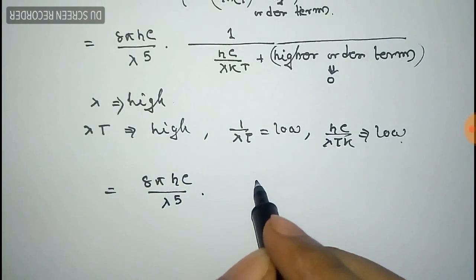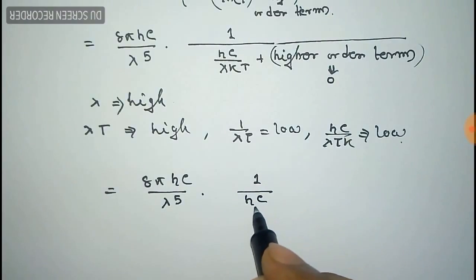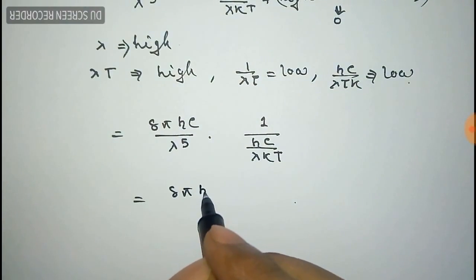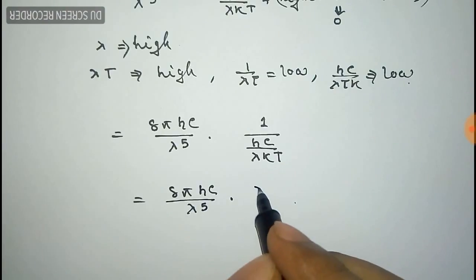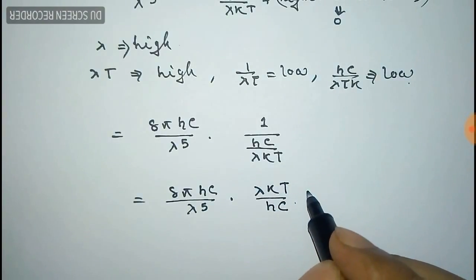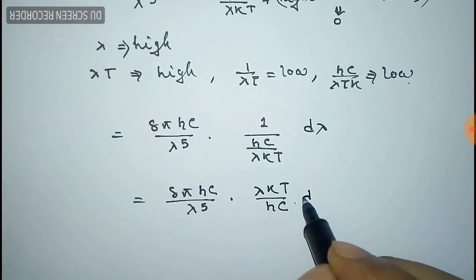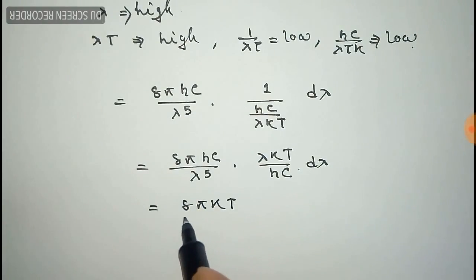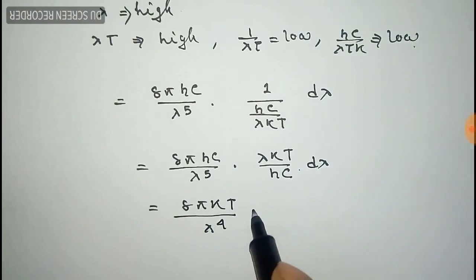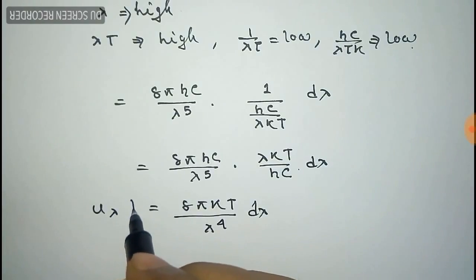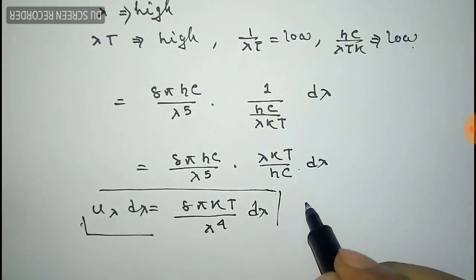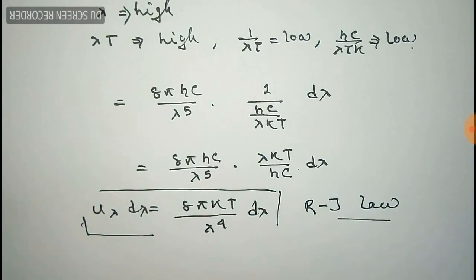After omitting the higher order terms, the expression becomes (8πhc / λ^5) × (1 / (hc/λkT)), which equals (8πhc / λ^5) × (λkT / hc). Here hc and hc cancel out, and we are left with (8πkT / λ^4) dλ. This is the Rayleigh-Jeans law, which we have successfully proved from Planck's law.